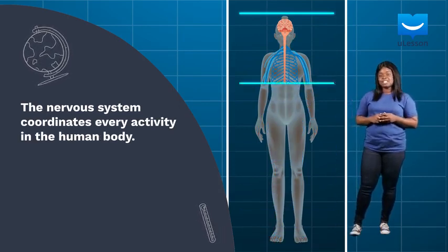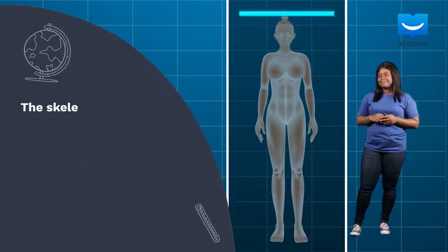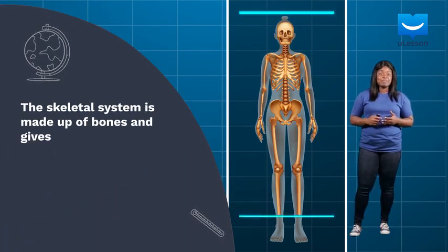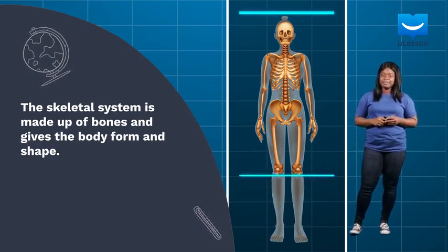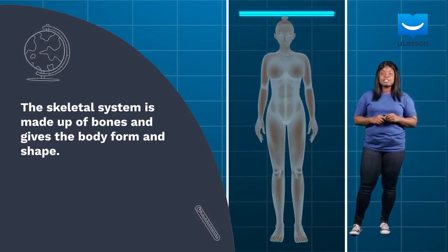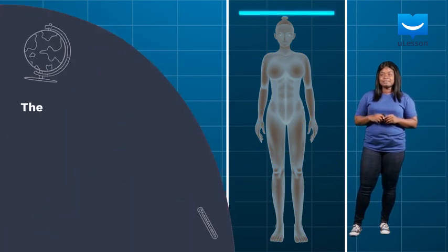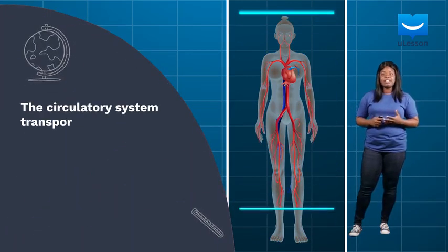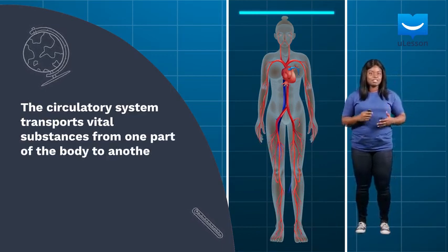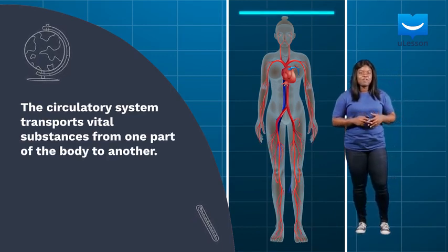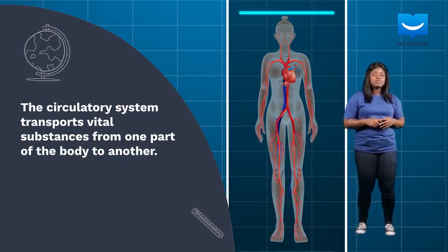Then, we'll go on to explore the skeletal system, which is made up of bones and gives the body form and shape. Next, we'll explore the circulatory system that functions like a road network containing vehicles that help transport vital substances from one part of our body to another.